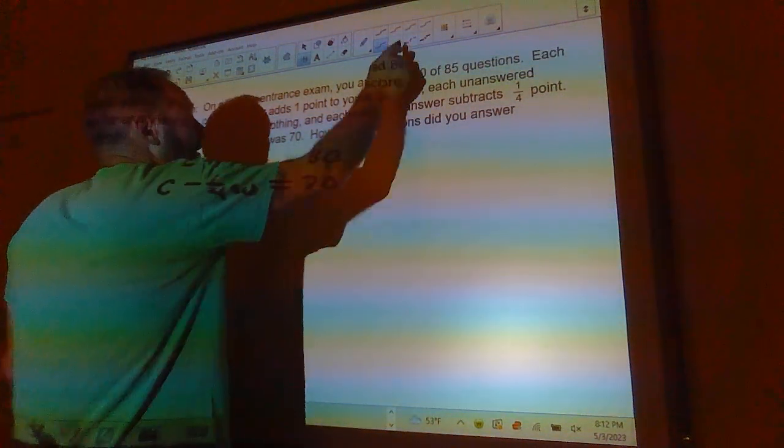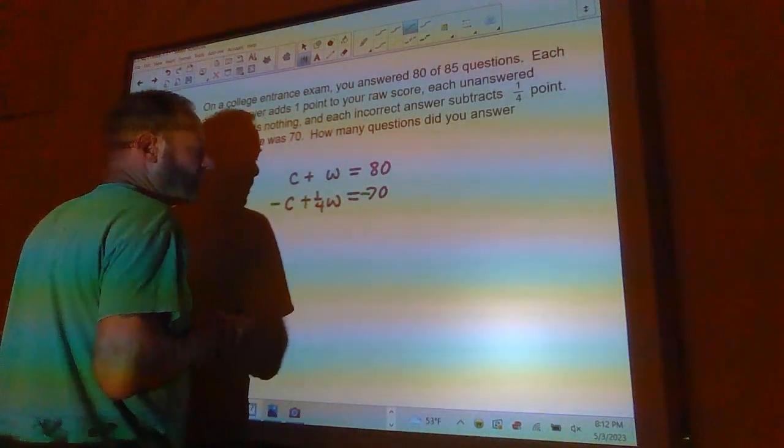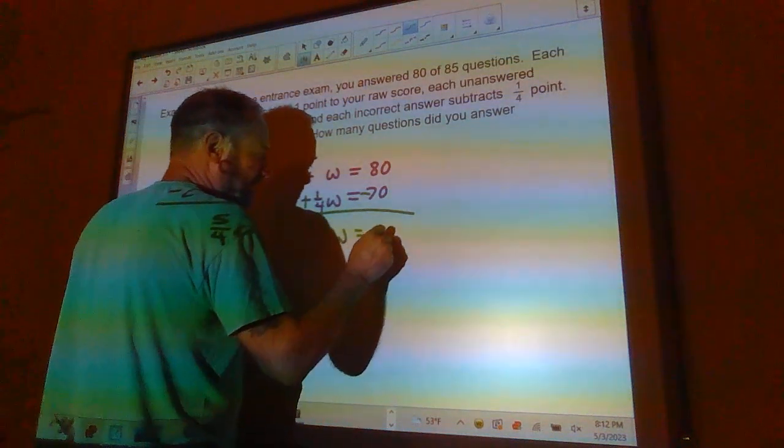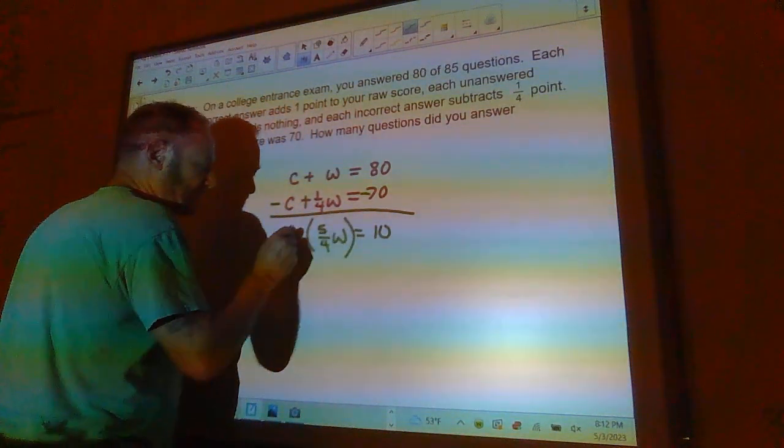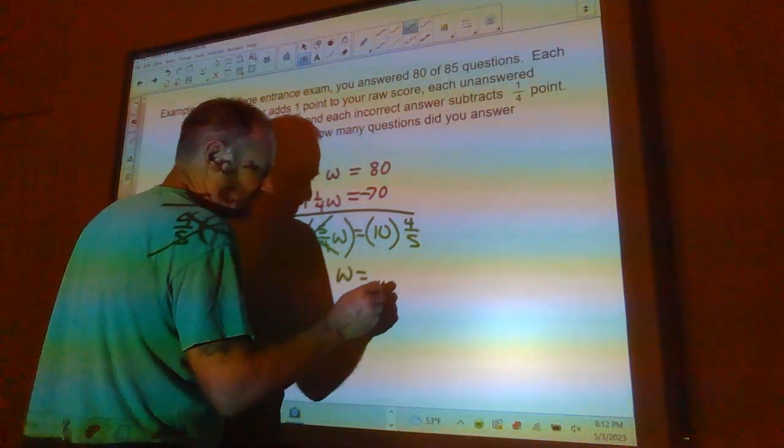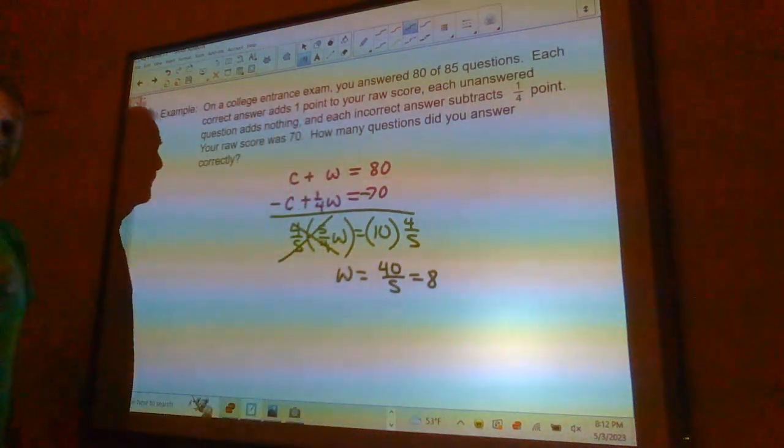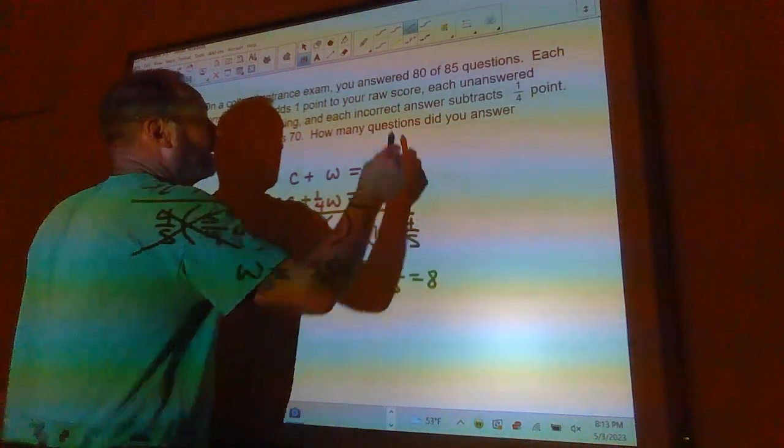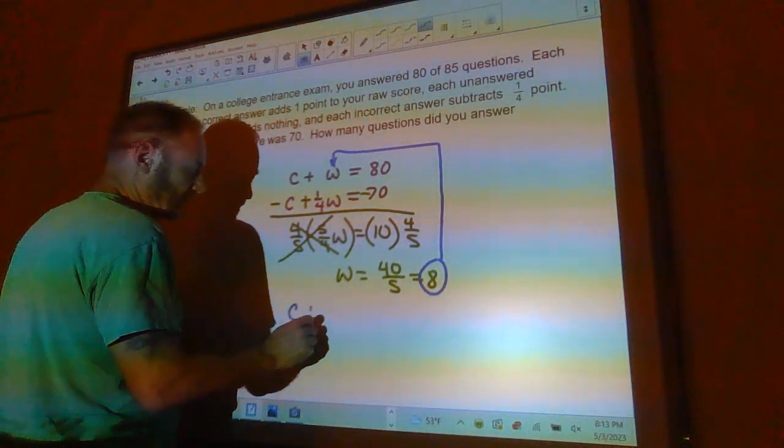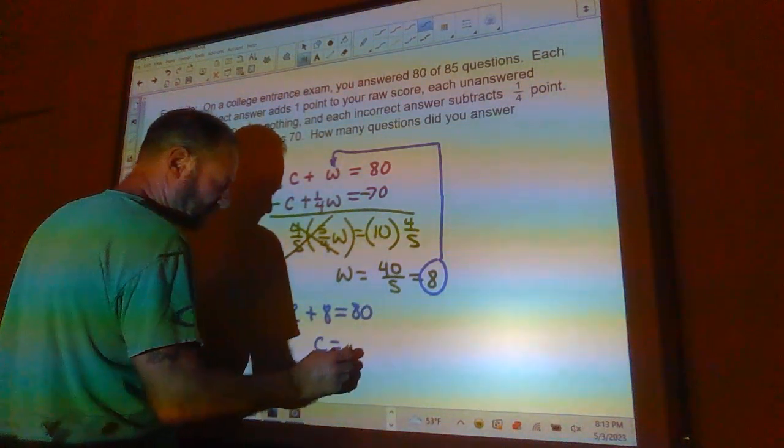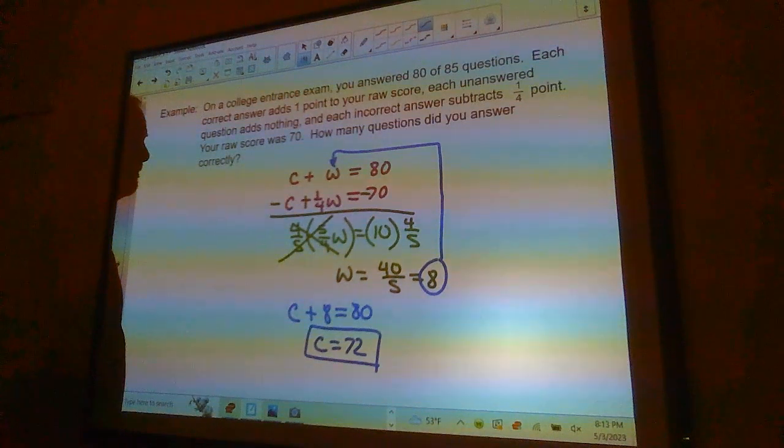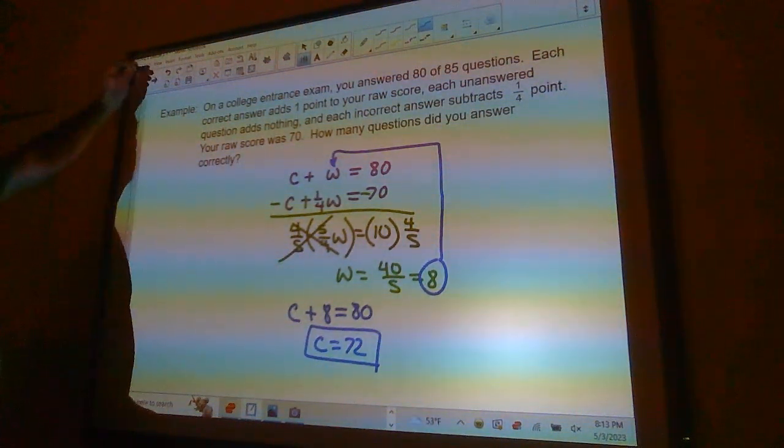Now once I get to here, the rest of this is easy. So I'm going to multiply this equation by negative 1, so that I get my Cs to cancel out really easy. This becomes 5 fourths W equals 10. And now I'm going to multiply both sides by 4 fifths, because that's going to cancel out the 4s and the 5s here. So I get W is 40 over 5, which is 8. So I know that I missed 8 questions. Now I'm going to take this back up here and plug it in right there, because that's an easy question to solve. C plus 8 has to equal 80, which means C has to be 72. So I got 72 correct, and that answers my question right there.